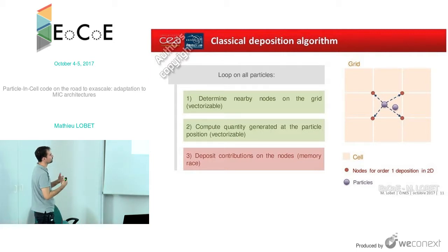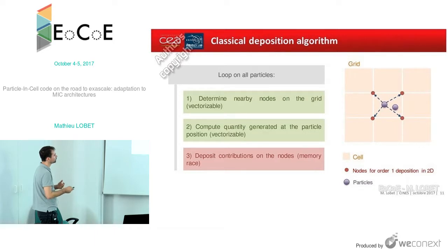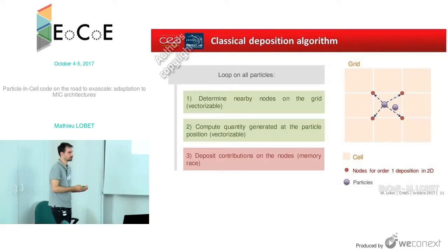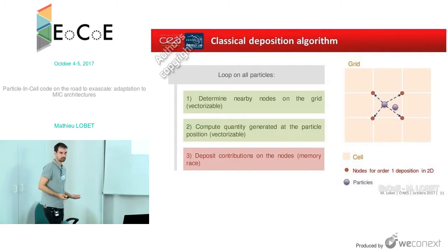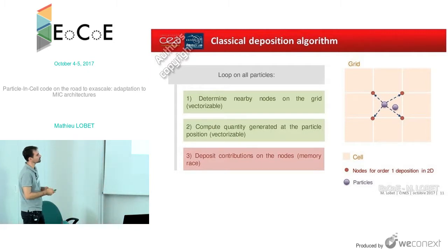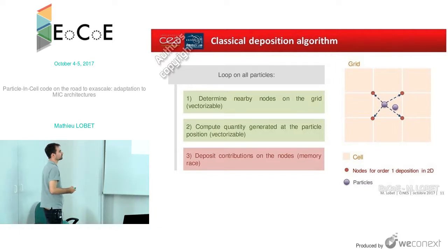Here is the simple, most classical algorithm. We have a loop over all the particles of the tile. For each particle, we determine the nearby nodes first, then we compute the quantity we want to deposit, and then we do the deposition with coefficients depending on the distance between all the nodes. The two first steps can be well vectorized, but not the last one. Because if two particles are localized in the same cell, they will have to deposit simultaneously their contribution, and there will be memory races or vectorization issues, and the results cannot be trusted.